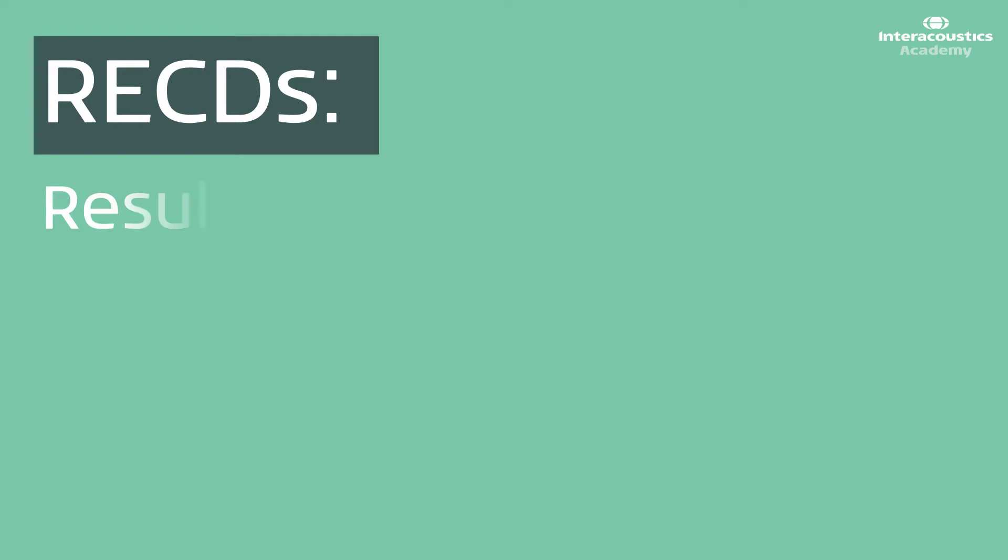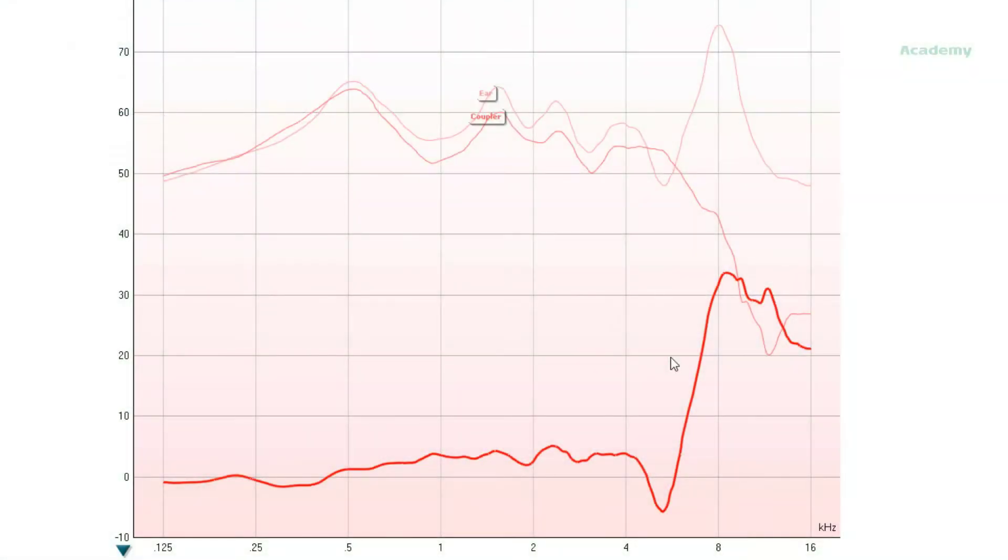Once you have completed your measurement, the software will display the coupler measurement, the ear measurement, and the RECD value, which is the difference between the two. You are then ready to perform your hearing aid verification in the coupler. However, it is important to inspect your RECD to ensure that it is a good quality measurement.